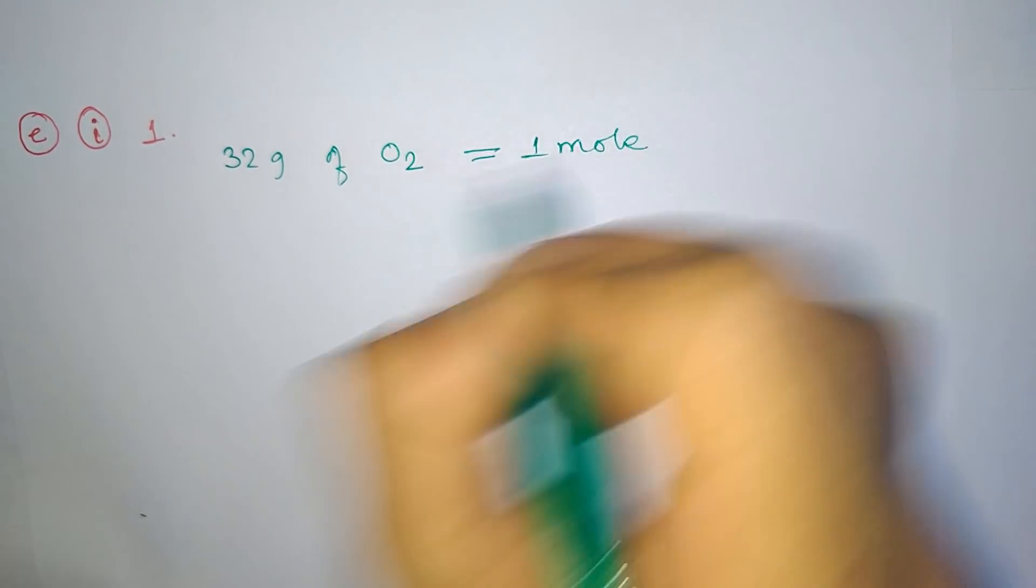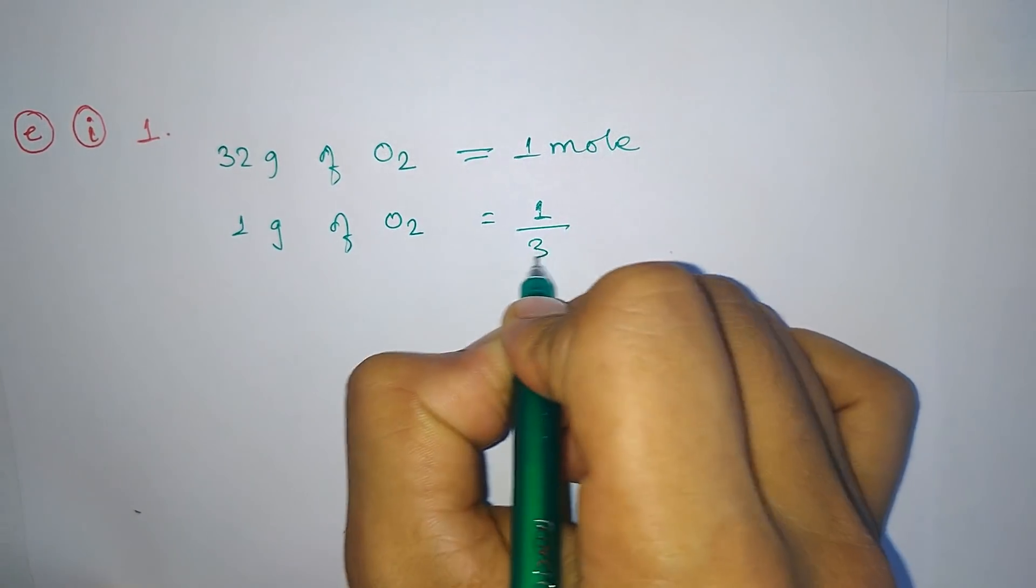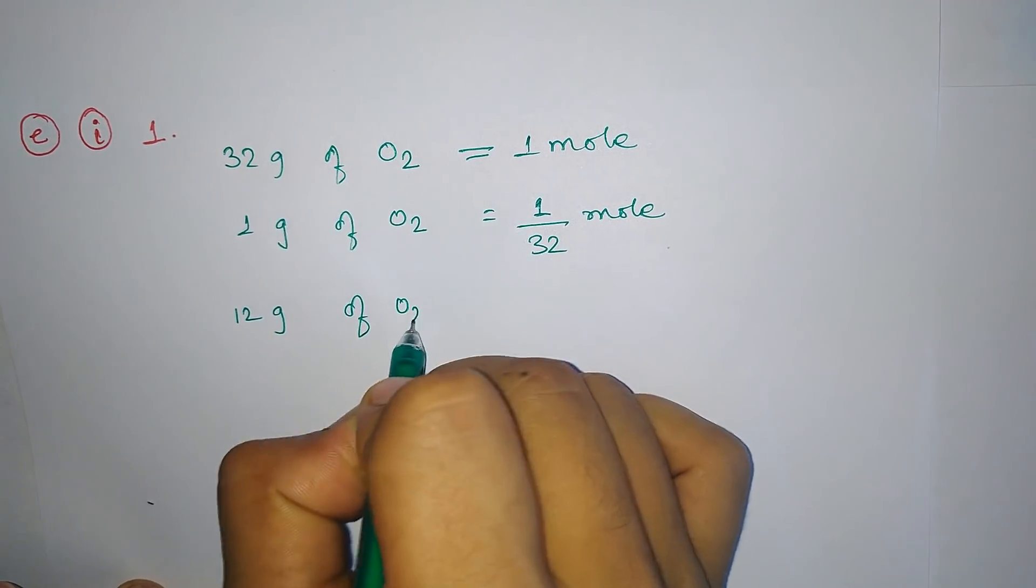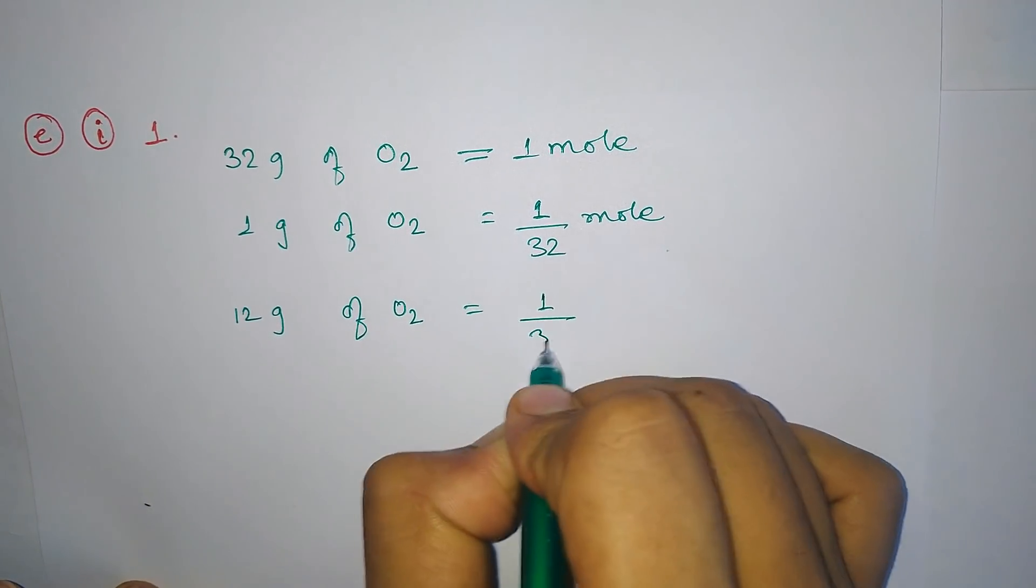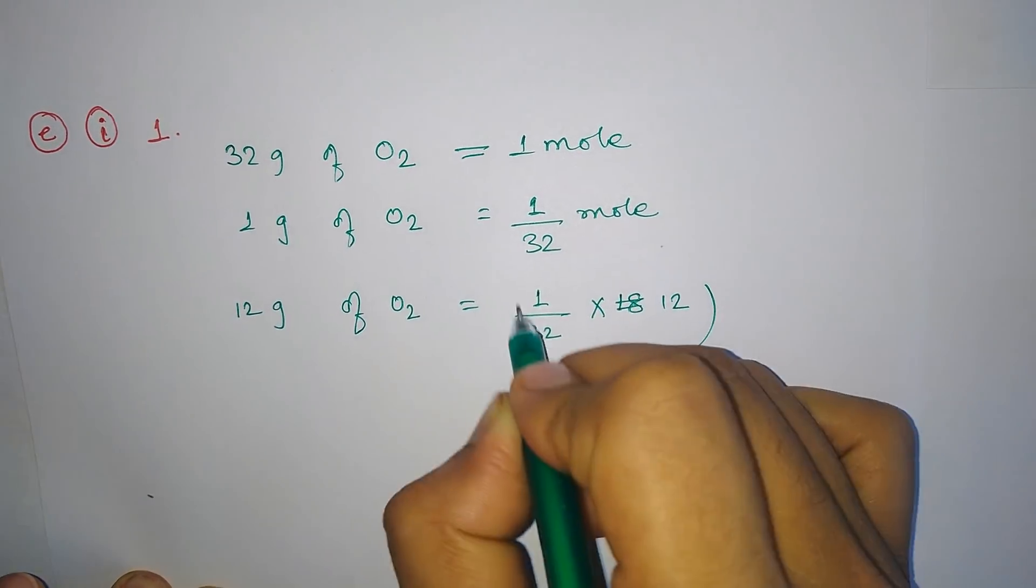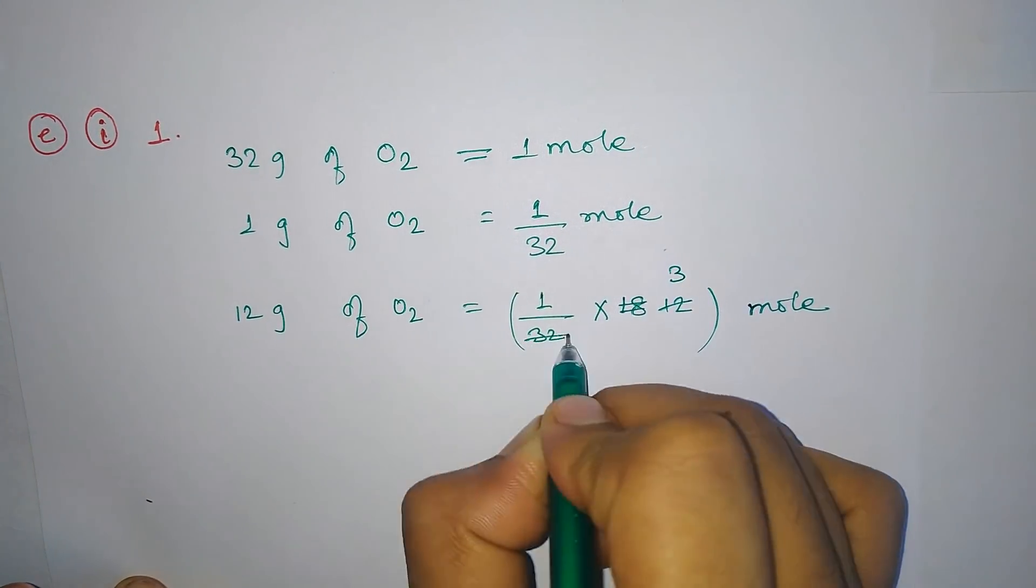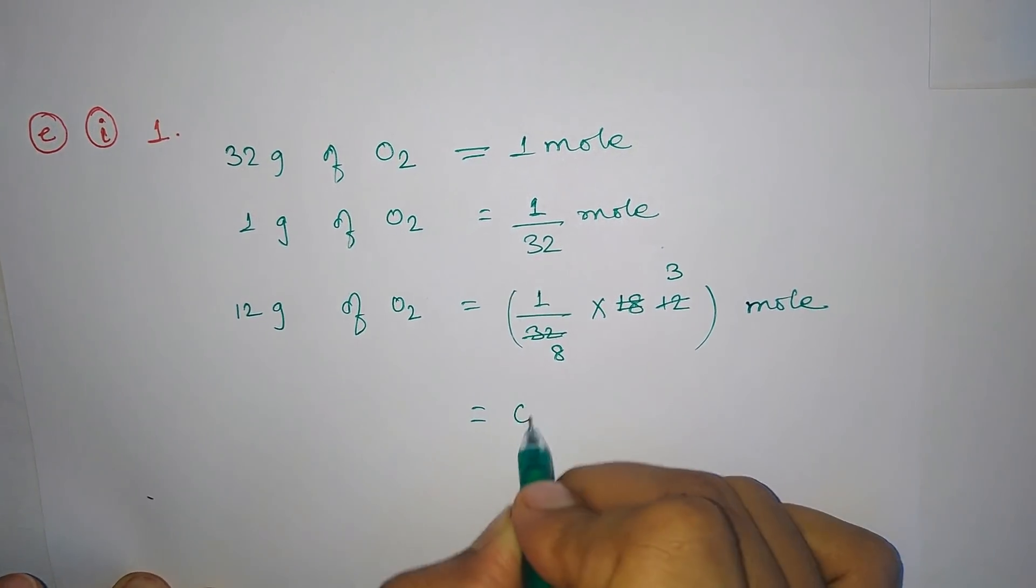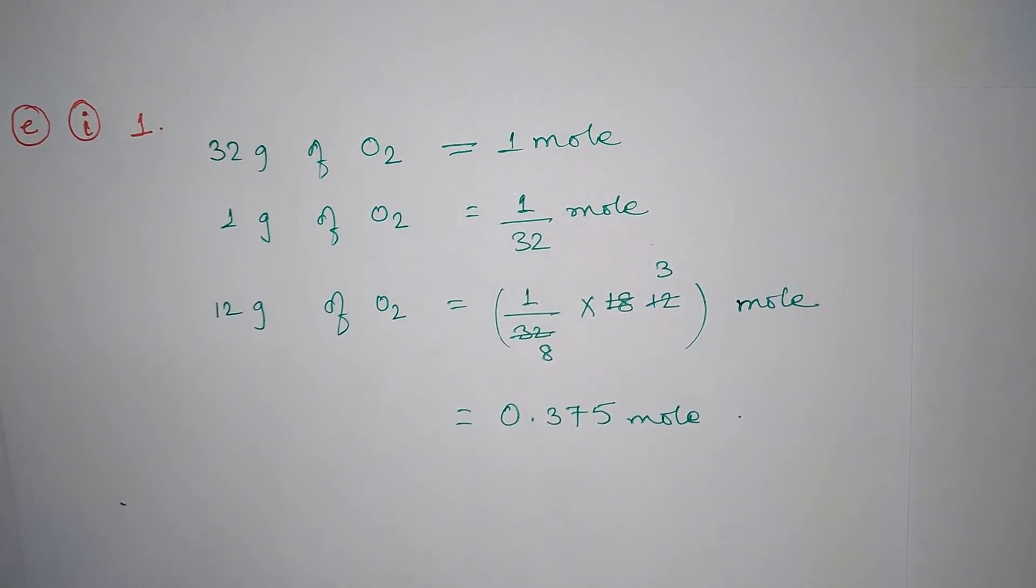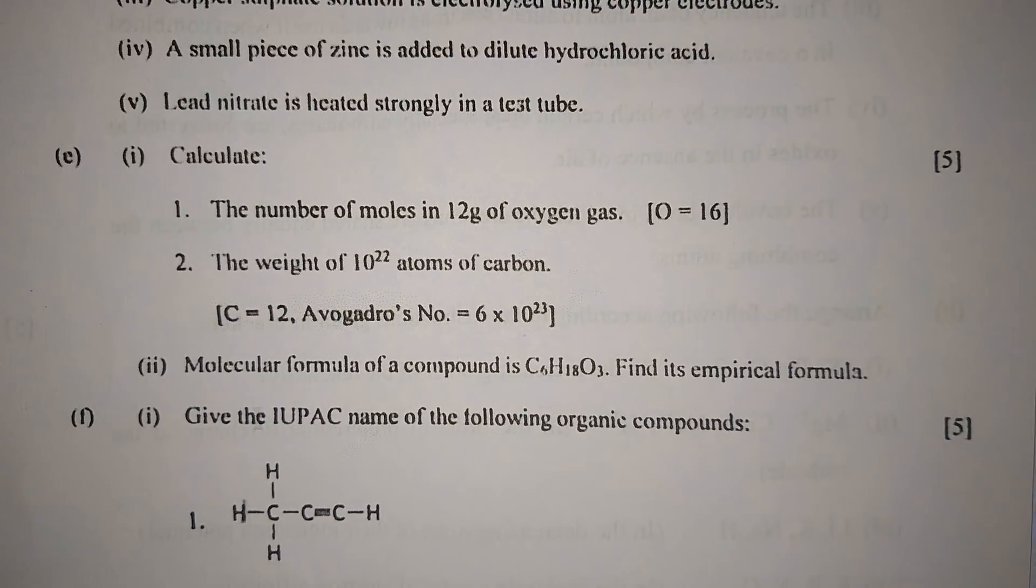Part E1: Calculate the number of moles in 12 grams of oxygen gas. Now 32 grams of oxygen equals one mole. Thus one gram of oxygen gas will equal 1/32 mole, and thus 12 grams of oxygen will equal 1/32 times 12 moles. That is 3/8, which is 0.375 mole.